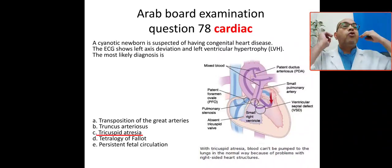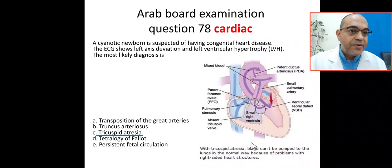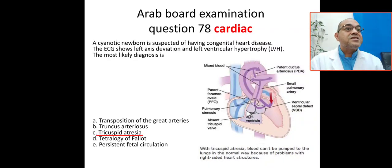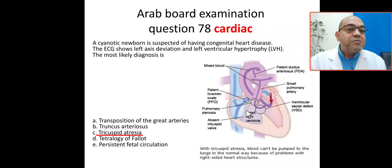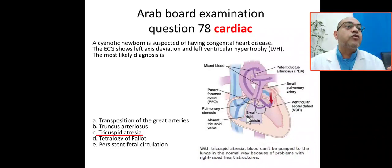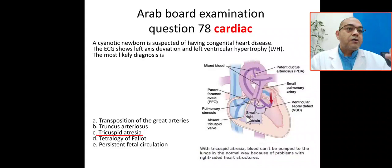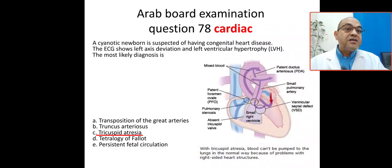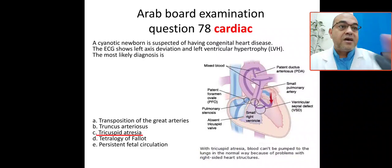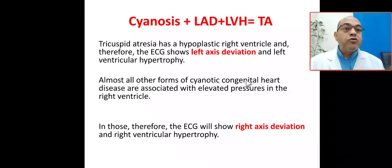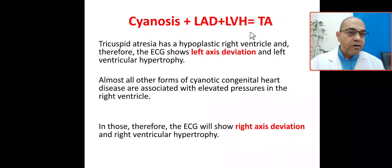This is a common question in Arab board, Saudi board, Jordanian board, and Egyptian board — all the boards. Tricuspid atresia means absence or agenesis of the tricuspid valve, so there is no communication between the right atrium and right ventricle. Therefore the right ventricle becomes shrunk and underdeveloped — we call it hypoplastic right ventricle. It may be muscular, membranous, or valvular in type, and it is associated with TGA or pulmonary stenosis.